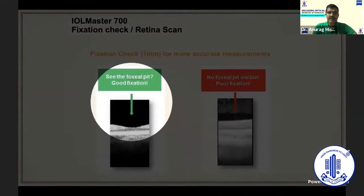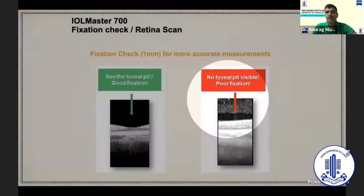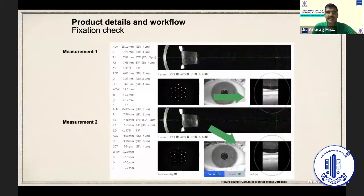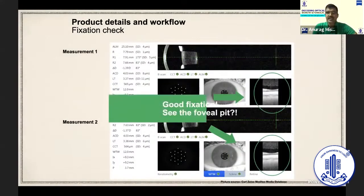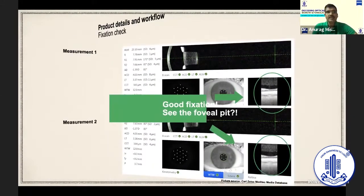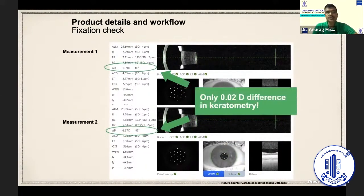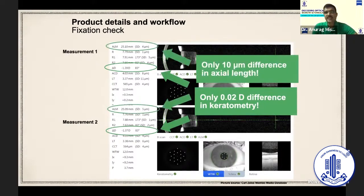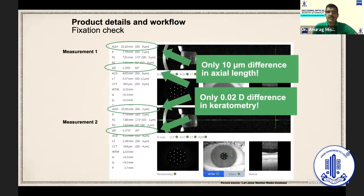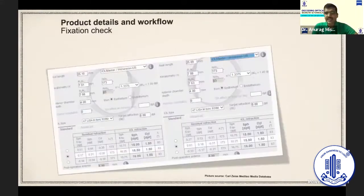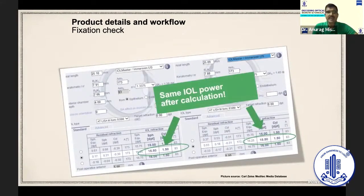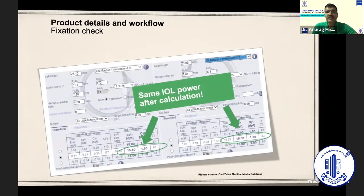We should check the foveal pit from where the light has echoed. If there's no foveal pit, then the reading should not be taken. Here the foveal pit is being shown. And the measurement shows that the difference between the two keratometric readings is 0.02; we should discard if it's more than 0.05. And when it comes to axiometry, the difference between them should be less than 20 microns, which this particular patient is exhibiting. So as a result, we can see the IOL powers are showing similar values in both the calculations in both the eyes.